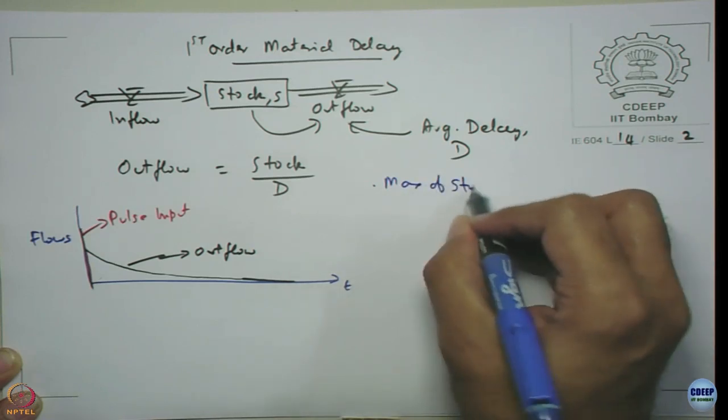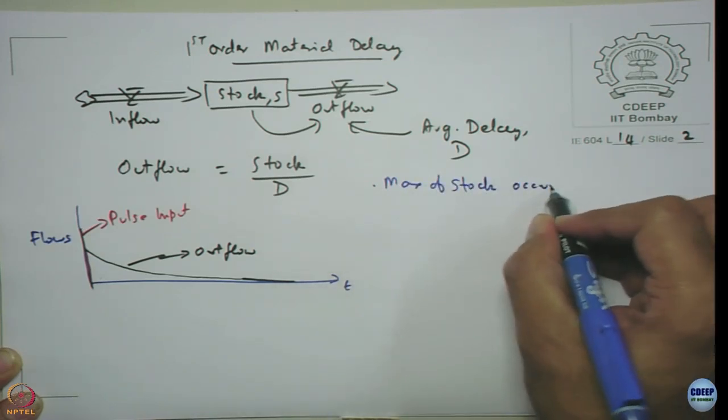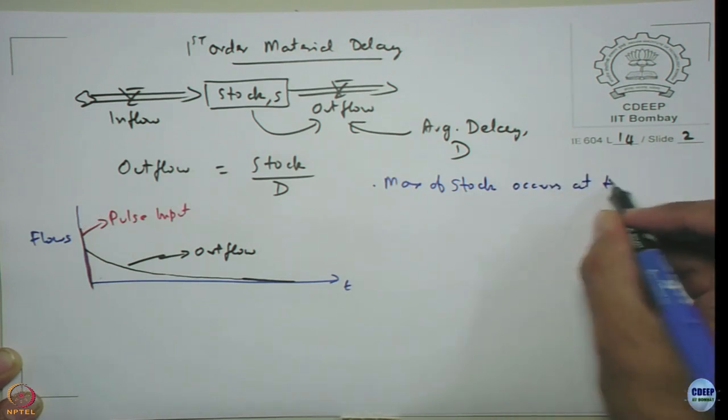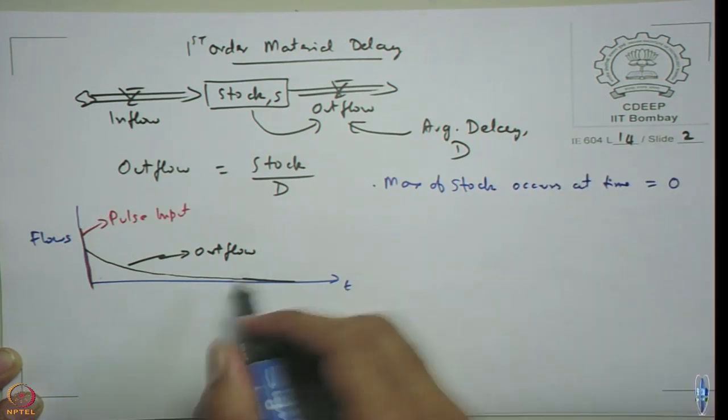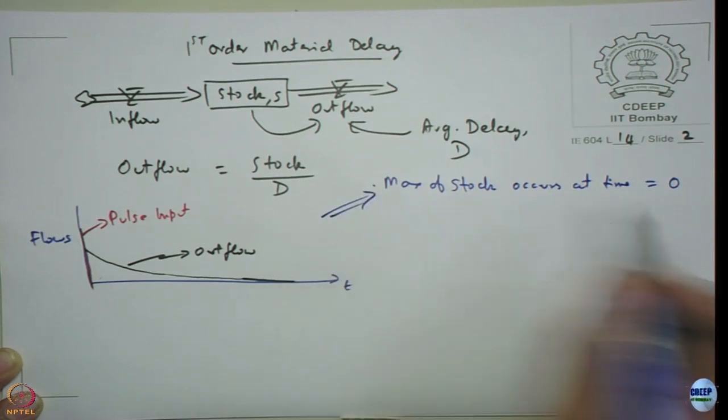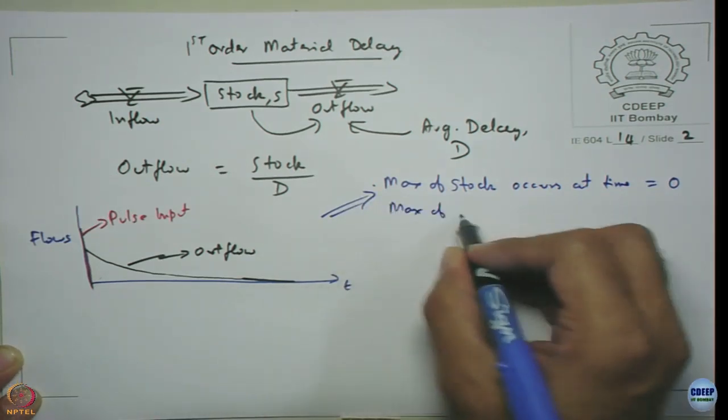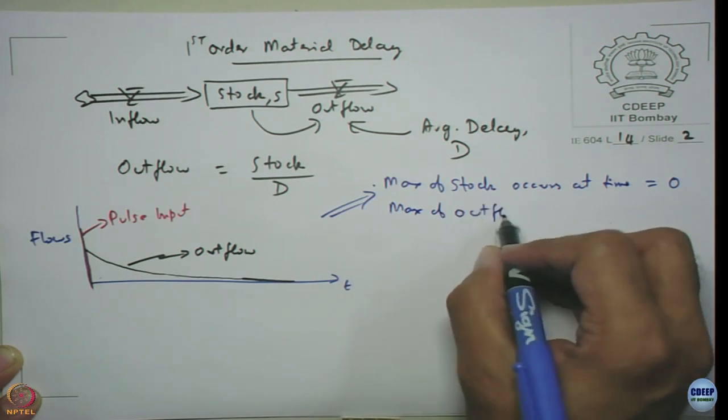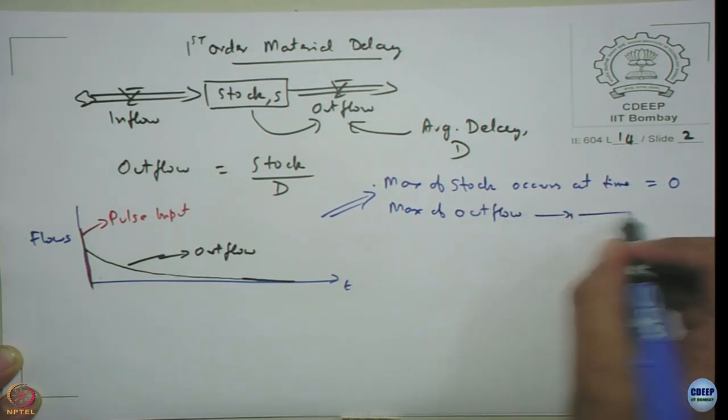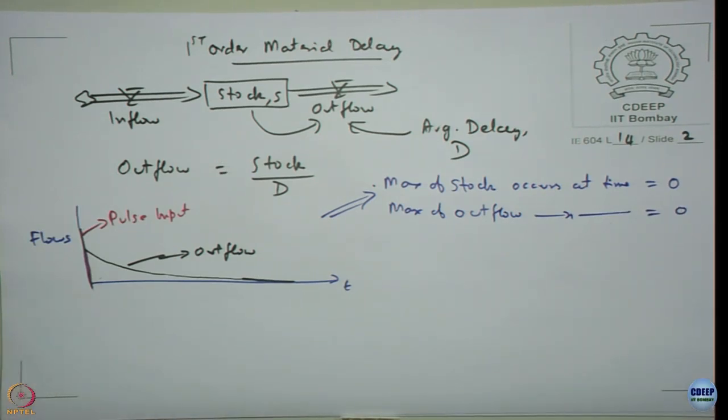Max of stock occurs at time equal to zero, this for this particular example. Max of outflow also will be the same, occurs at time equal to zero, just proportional to the stock.